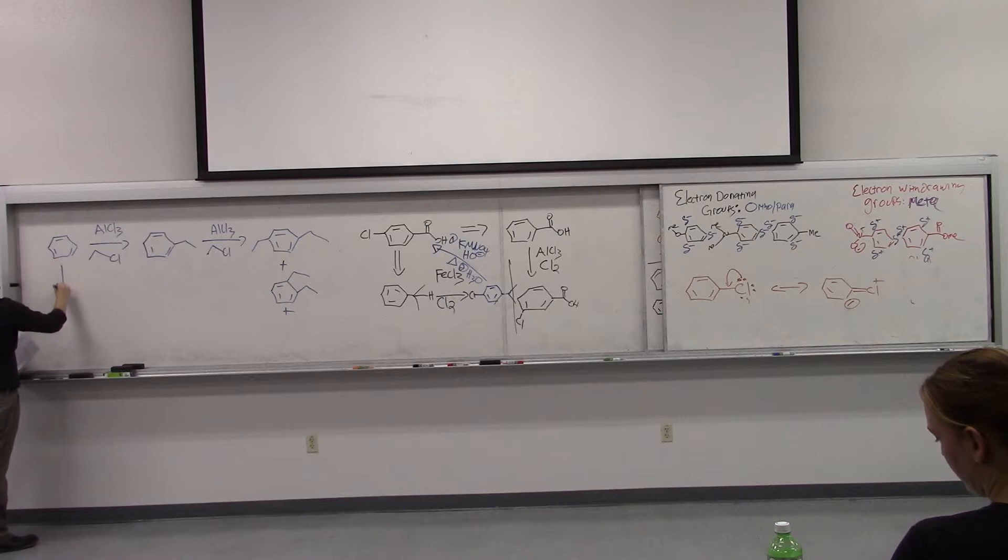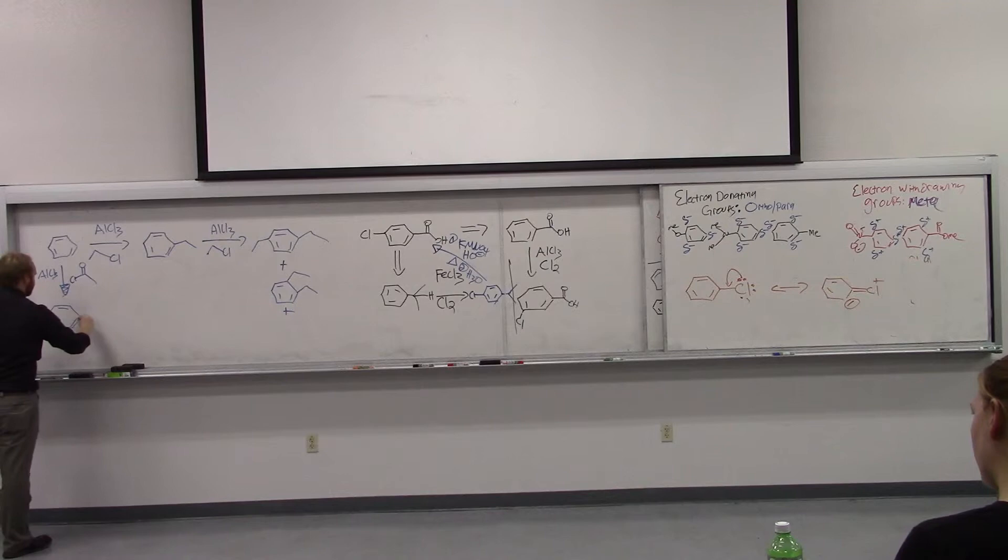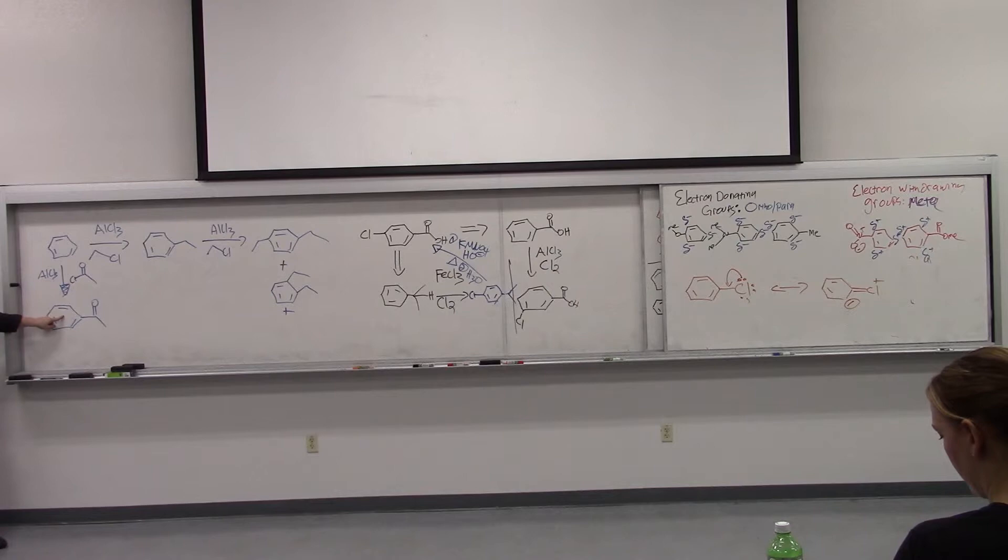So if you want to make ethyl benzene, the best way to do it, the quickest way to do it, is to do a Friedel-Crafts acylation. And so now we're into acylation. Is the product going to be more or less reactive than the starting group? That's going to be less reactive, right? Because an acyl group is electron withdrawing. So this will stop once. So we'll get a lot better control of stopping once with an acylation.